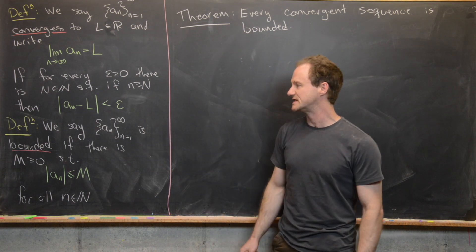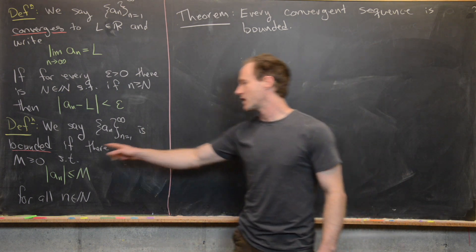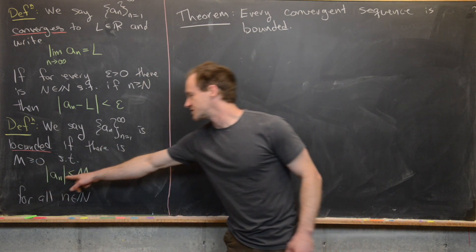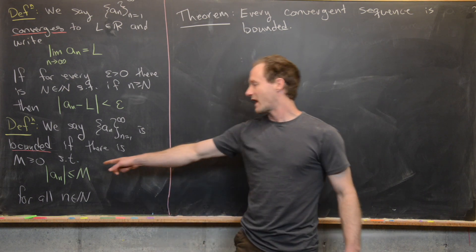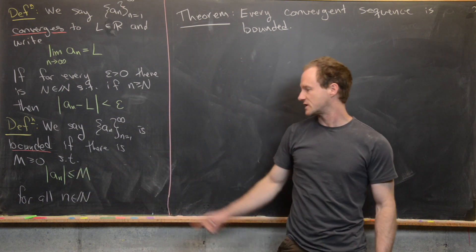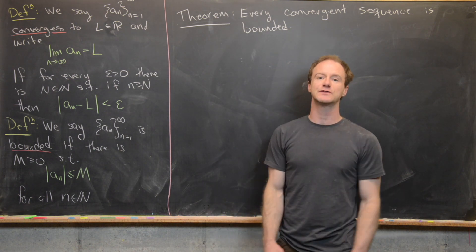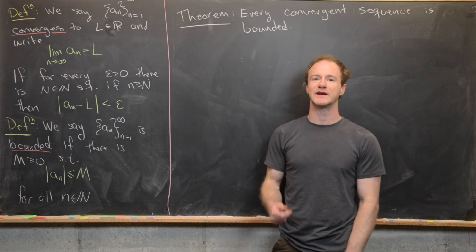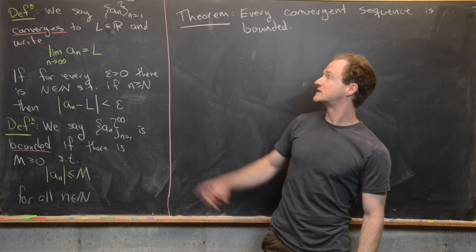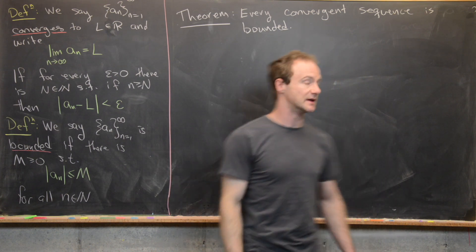Next, we say that a sequence a_n is bounded if there is a real number M such that |a_n| is less than or equal to M for all n in the natural numbers. In other words, the absolute value of a sequence can only get to a certain size. Now what we want to do is prove that if a sequence converges, then it must be bounded.